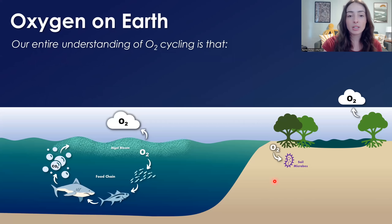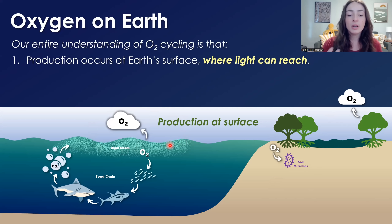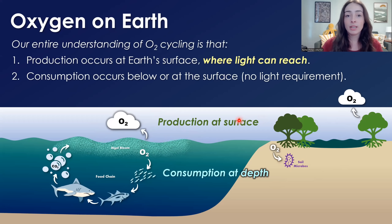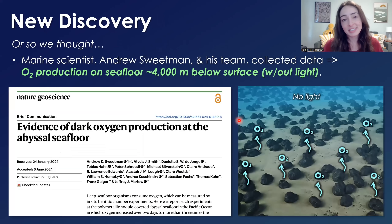All the while, our understanding of oxygen cycling is that production of oxygen happens at the surface — at land surfaces with trees and plants, or at the ocean surface in the photic zone where light reaches with algae and bacteria. Consumption of oxygen happens at depth within the water column of the ocean, within seafloor sediments, in soils, and at Earth's surface. Light is not required for oxygen consumption, but it is a requirement for oxygen production. So no oxygen was thought to be produced deep in the subsurface or on the seafloor where light can't reach. Or at least, so we thought.